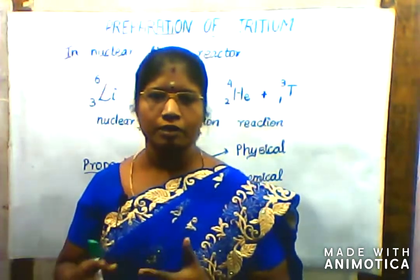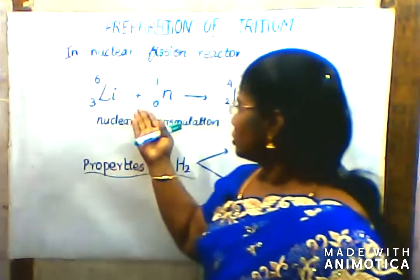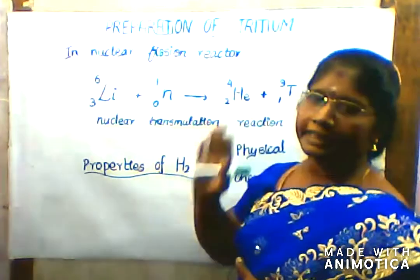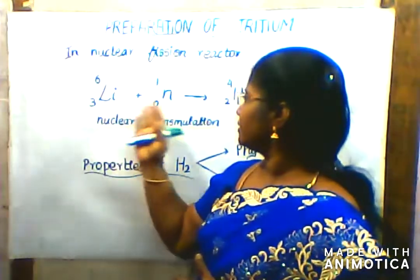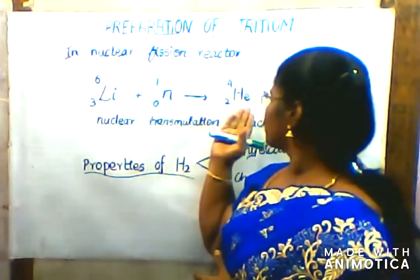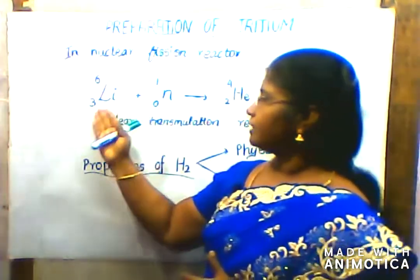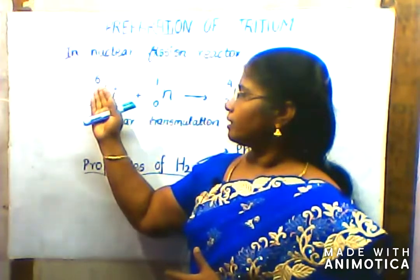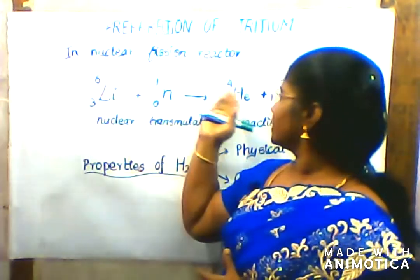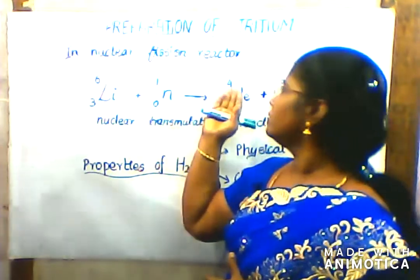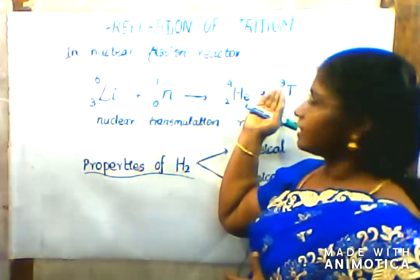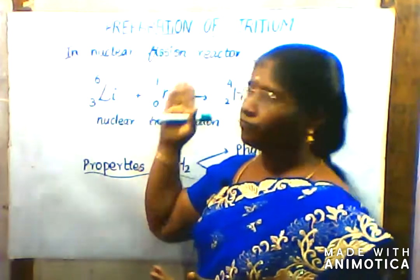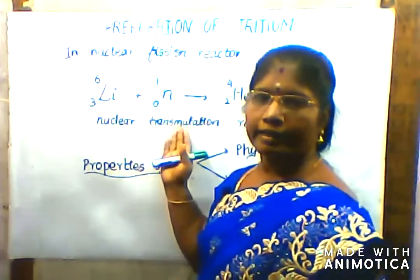We need to do it even though it is Tritium. Now let's look at lithium and helium and tritium. Lithium has atomic number 3 and atomic mass 6. This involves a nuclear transmutation reaction.